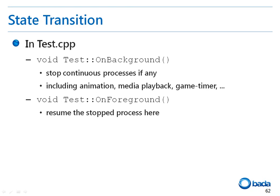The onBackground and onForeground functions that handle the state transition of the application are also implemented in the test.cpp file. The onBackground function stops any permanently running processes such as animation, media playback, and game timer processes. The onForeground function resumes any previously stopped processes.